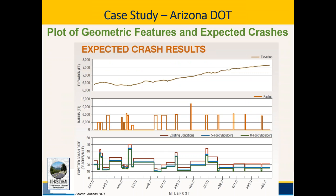Let's look at a case study done by the Arizona DOT. The top graph shows the grade data for the project. The middle graph shows the length of various segments that IHSDM split up, along with the radius of each segment — portions with a radius of zero are essentially tangent segments. The bottom graph shows the predicted crash rate for each segment under three options: existing conditions, adding 5-foot shoulders, and adding 8-foot shoulders.